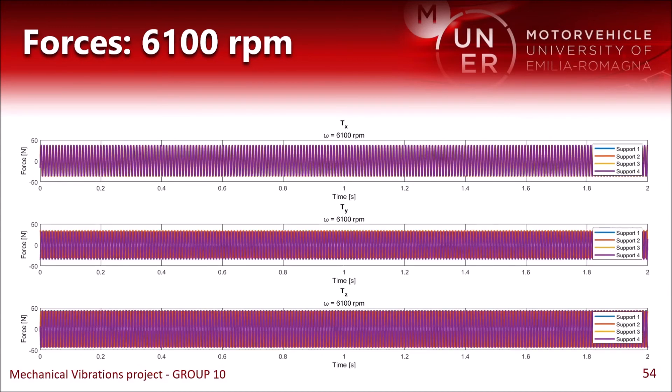And at 6100 rpm, we have even lower forces and displacements, so it is an optimal working condition for the engine. The displacements are almost negligible, so we can say that the forces are mostly due to the dampers.